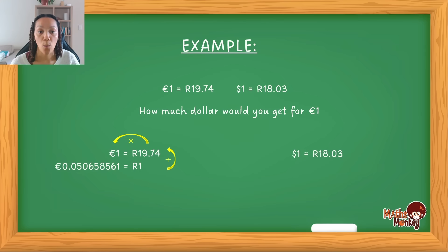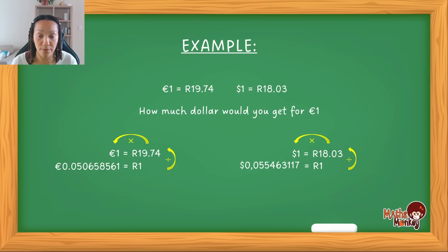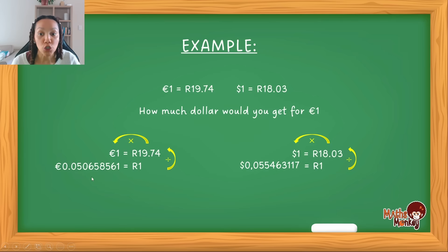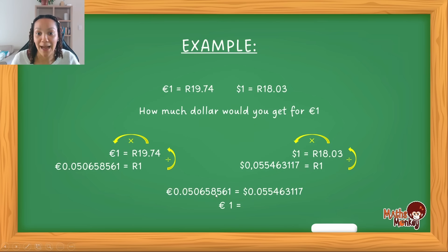Now we do the same for the Dollar. 1 Dollar is equal to 18 Rand 3 cents. We want to find what it equates to for 1 Rand. Using the LVN method, that gives us 0.055463117 Dollar. We equated both currencies to 1 Rand. If that amount of Euro equals 1 Rand, and that amount of Dollar equals 1 Rand, then both values are essentially equal to each other. Now we can answer the question: how much dollar would you get for 1 Euro? Place the 1 Euro underneath the Euro, apply LVN — divide, multiply — and 1 Euro costs $1.09.